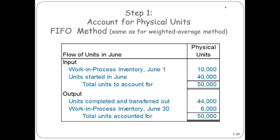Step one is the same step — nothing's changed. Inputs equal outputs: 50,000 equals 50,000. So we're all good with that.